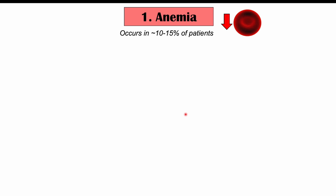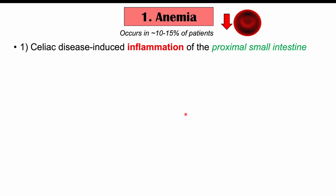The first atypical finding is anemia — a low hemoglobin or red blood cell count. Anemia occurs in approximately 10 to 15% of patients with celiac disease, and there are multiple mechanisms. One mechanism is celiac disease-induced inflammation of the proximal small intestine, which is the most commonly affected area. Since the duodenum is where iron and folate are absorbed, inflammation in that area impairs iron and folate absorption.